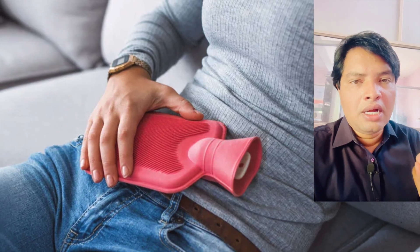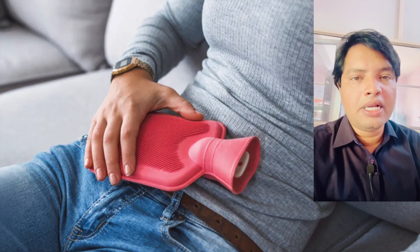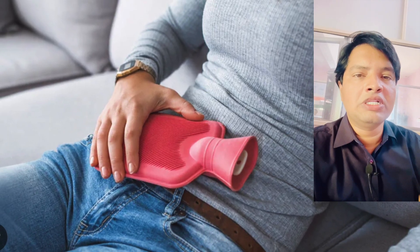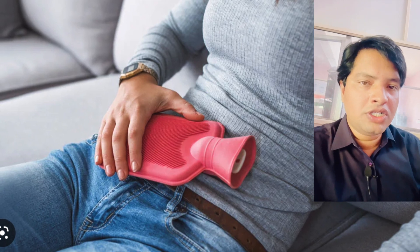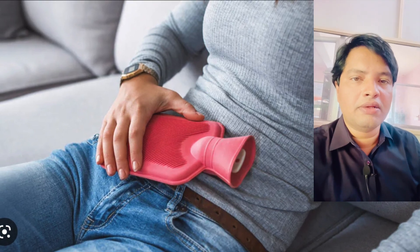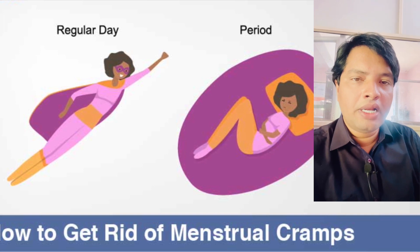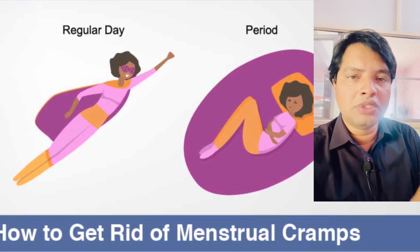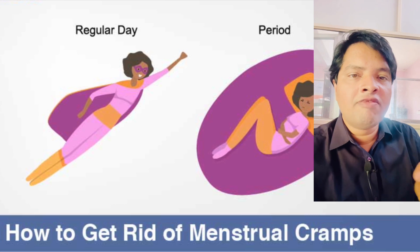Next, mefenamic acid is an NSAID — a non-steroidal anti-inflammatory drug. So it reduces inflammation. The dicyclomine relaxes smooth muscles while the mefenamic acid addresses inflammation, making this a combined action tablet.